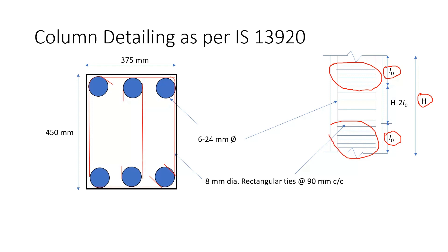Up to a length of L0 we need to provide lateral ties or stirrups that are closely spaced like this. And in the middle portion you can provide lateral ties that are spaced farther.